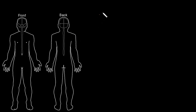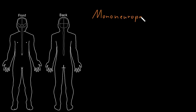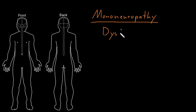In this video, I'm going to introduce the category of syndromes called mononeuropathy. Mono meaning one, neuro meaning nerve, and pathy meaning abnormality or disorder. So mononeuropathy means dysfunction of one nerve.